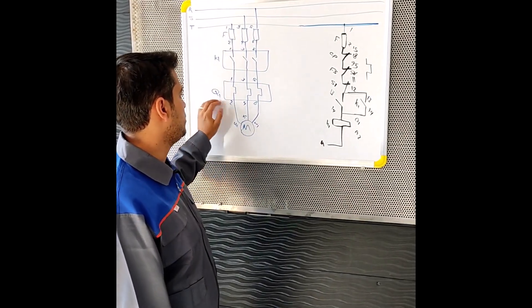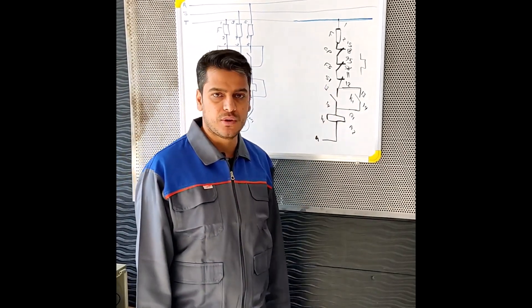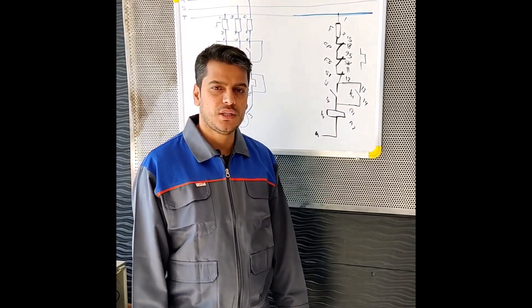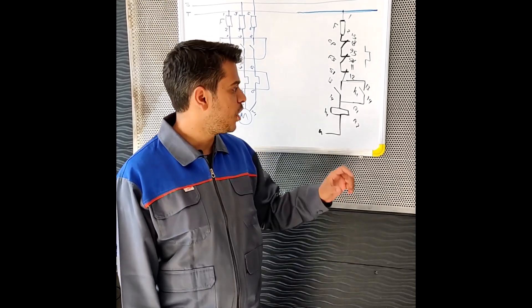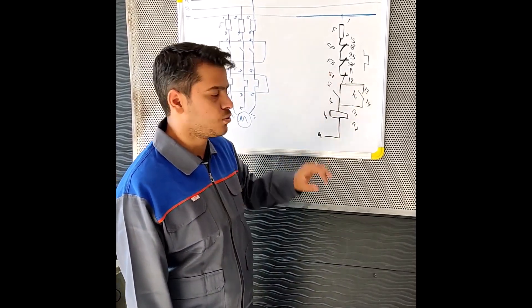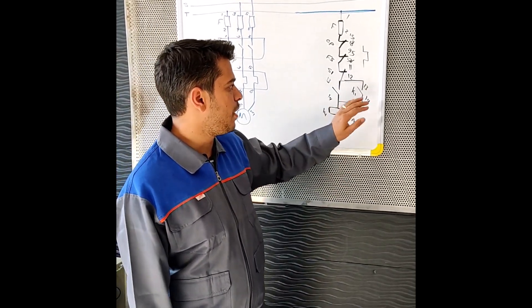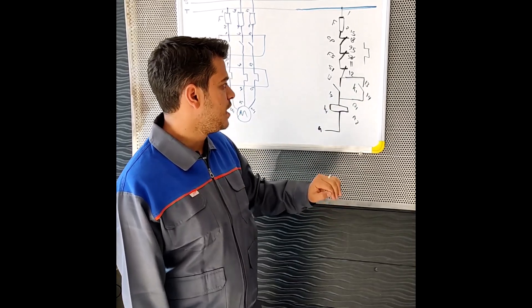In the permanent and momentary mode, the power circuit is the same. It means that all the elements are the same and there is no difference. But the command circuit is different.